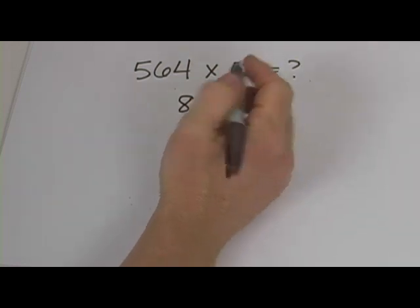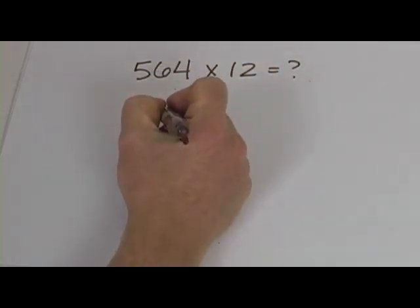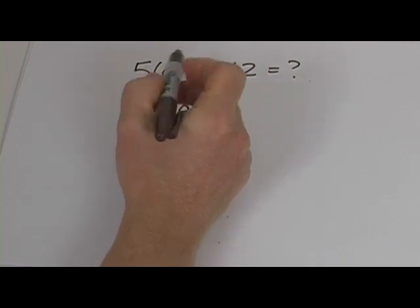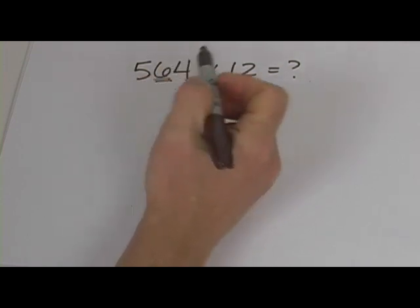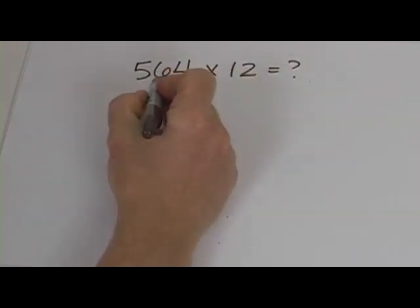And the next digit in the answer, what we're going to do is take the 6 and double it, and then add it to the 4. So 6 twice is 12 plus 4 is 16.